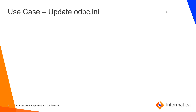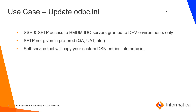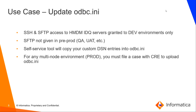For the use case, customers have access to SFTP into servers for the dev environments. However, this same access is not given for pre-prod. So this self-service tool is meant to fill the gap and allow you to update ODBC-INI as needed without filing a case. The tool copies your custom DSN entries over into ODBC-INI, and it can be used to both add and remove custom entries. For any multi-node environment, as mentioned earlier, you need to file a case.